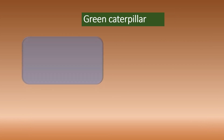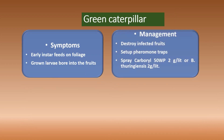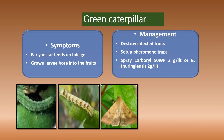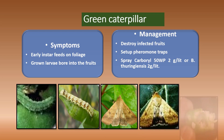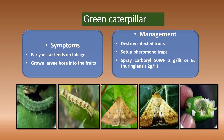Coming to green caterpillar — symptoms and management. Here are pictures showing how it affects the crop and fruit. Early instar larvae feed on the foliage, and grown larvae bore into the fruits of chili. Management practices include collecting and destroying infected fruits and grown-up larvae to decrease loss to fruits and foliage.